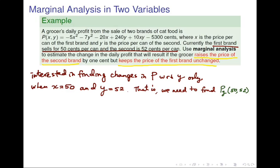Putting these two pieces of information together, we are looking for the partial derivative p sub y evaluated at (50, 52).